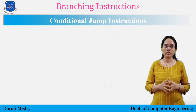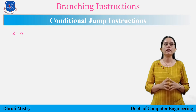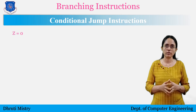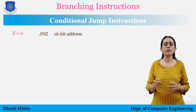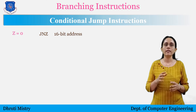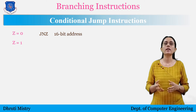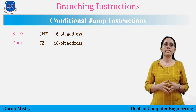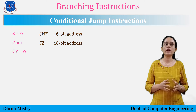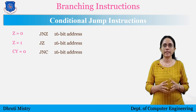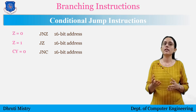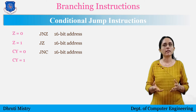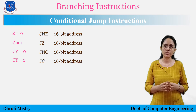For example, taking the zero flag: if the zero flag is 0, meaning not set, meaning the result is not zero, then the 'Jump If Not Zero' instruction is used. Next, for the carry flag: if the carry flag is 0, meaning not set, then the 'Jump If Not Carry' instruction is used. And if the carry flag is set, meaning a carry occurred, then the 'Jump If Carry' instruction is used.